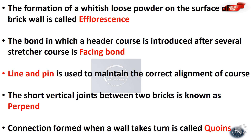The bond in which a header course is introduced after several stretcher courses is called facing bond. The line and pin is used to maintain the correct alignment of courses.